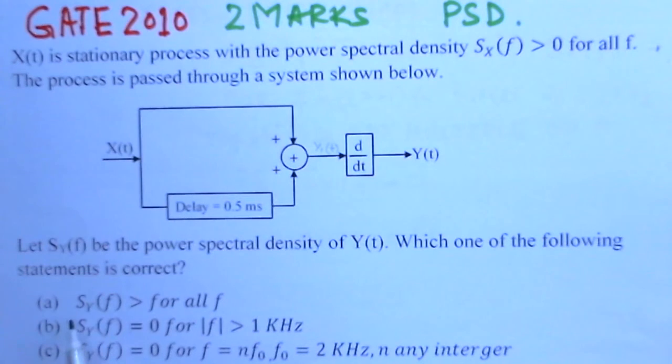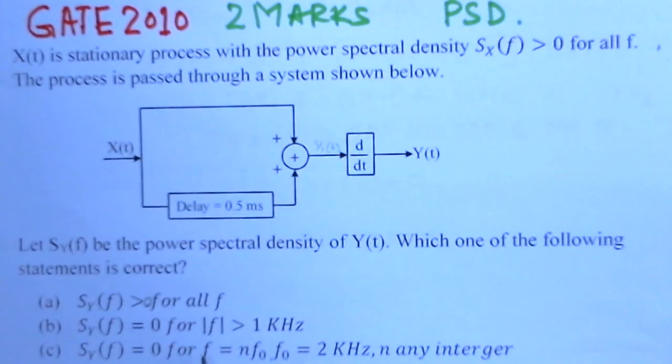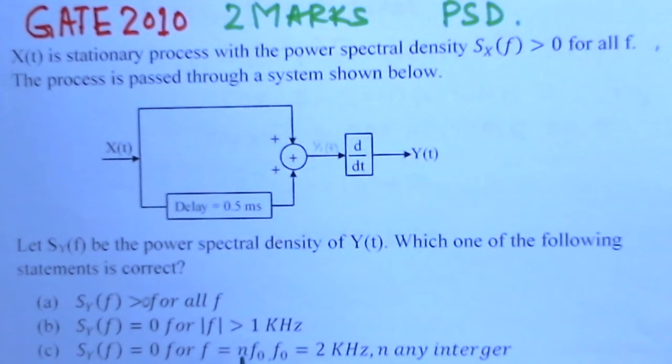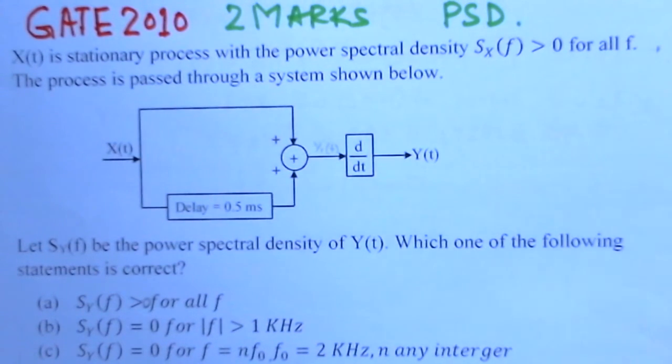Which of the following statements is correct? Like SY(f) greater than 0 for all f, or SY(f) equals 0 for f greater than 1 kilohertz, SY(f) is equal to 0 for certain f values, and there are four options here.